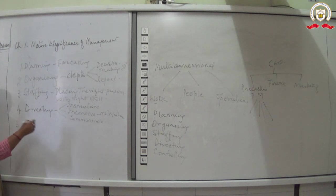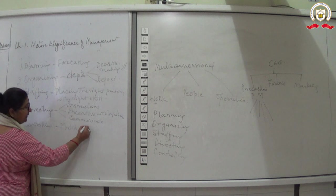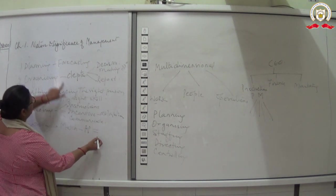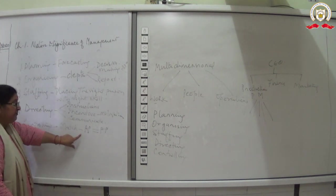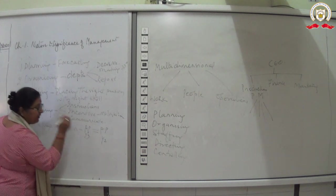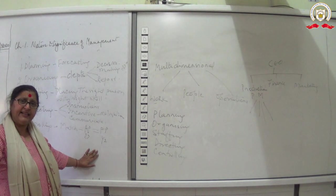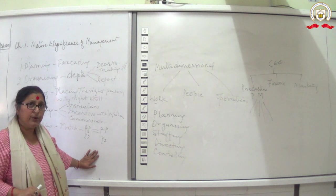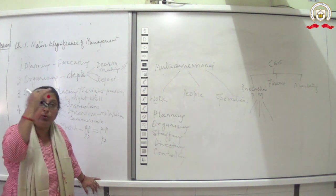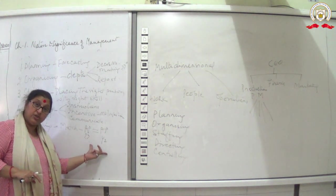The last function is controlling — matching whether actual performance equals planned performance. For example, if you planned to finish half a chapter in one hour, you check how much you actually finished. If you fall short and have a test in four days, you note the reasons and take action so those reasons don't cause you to miss your target again.